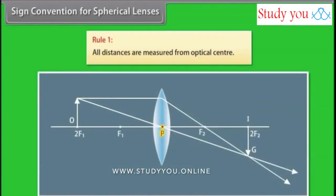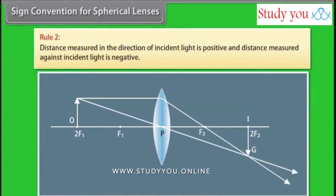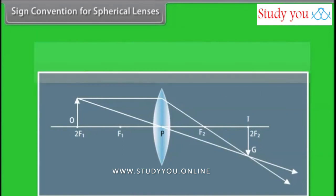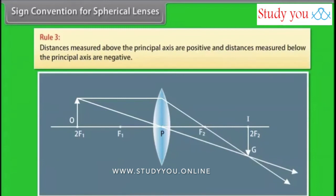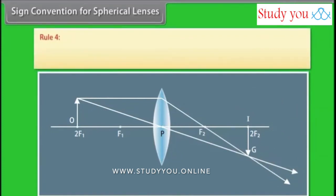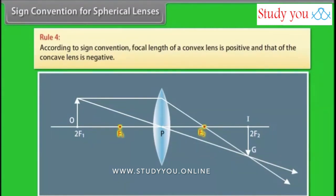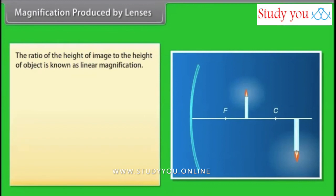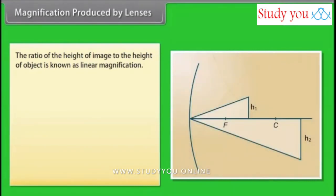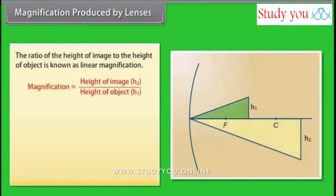Sign convention for spherical lenses: Rule 1 — all distances are measured from the optical center. Rule 2 — distance measured in the direction of incident light is positive; distance measured against incident light is negative. Rule 3 — distances measured above the principal axis are positive; distances below are negative. Rule 4 — the focal length of a convex lens is positive and that of a concave lens is negative. Magnification by lenses: M = H₂/H₁ = v/u, where H₂ is image height and H₁ is object height.